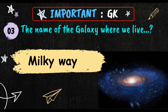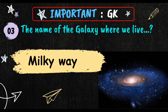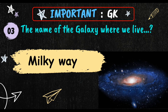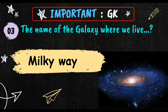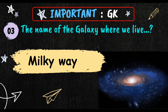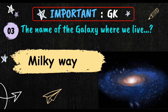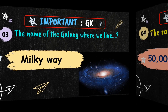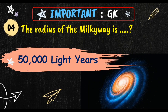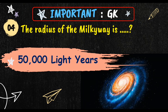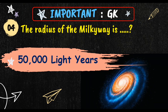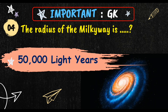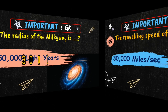In the universe, there are so many galaxies. Galaxy means Akash Ganga in Hindi, but the name of the galaxy where we live is Milky Way. The radius of the Milky Way galaxy is 50,000 light years. Milky Way is originated from the fact that it looks like a milky white band when we see it in the night.